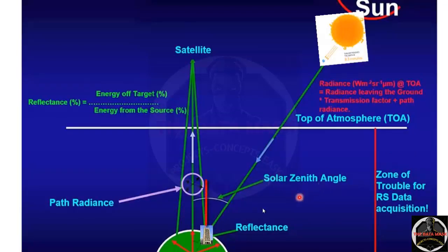Now to understand the solar zenith angle, draw a perpendicular line from the object of interest. The angle between that perpendicular line drawn from the object of observation and the solar radiation coming on the object, that angle is called solar zenith angle.